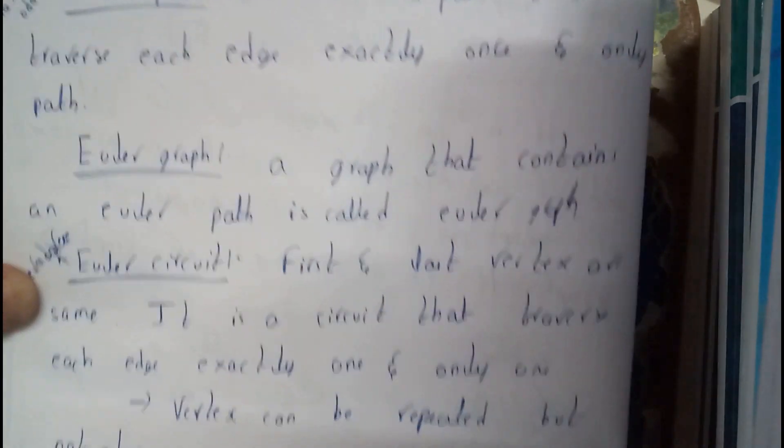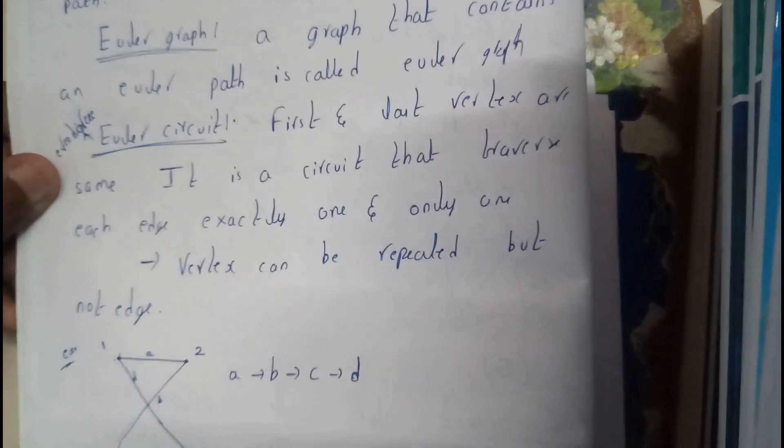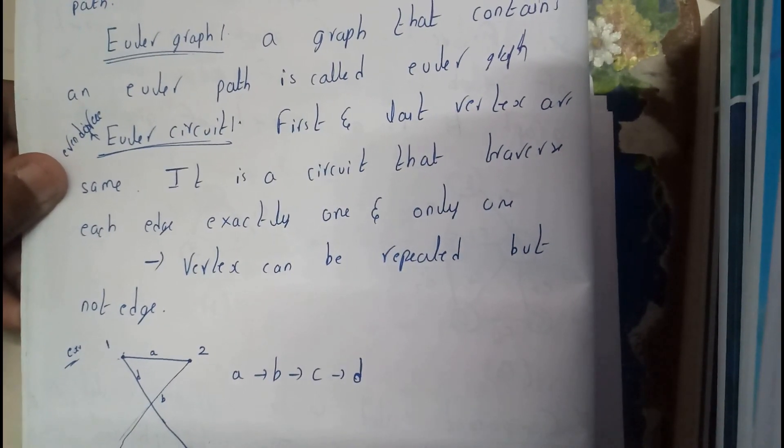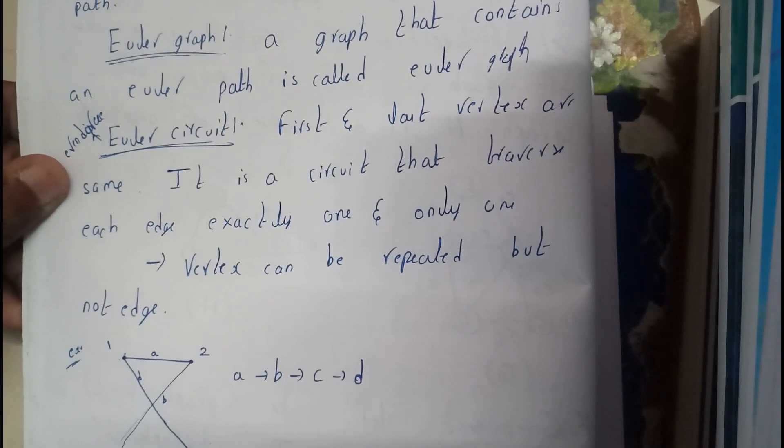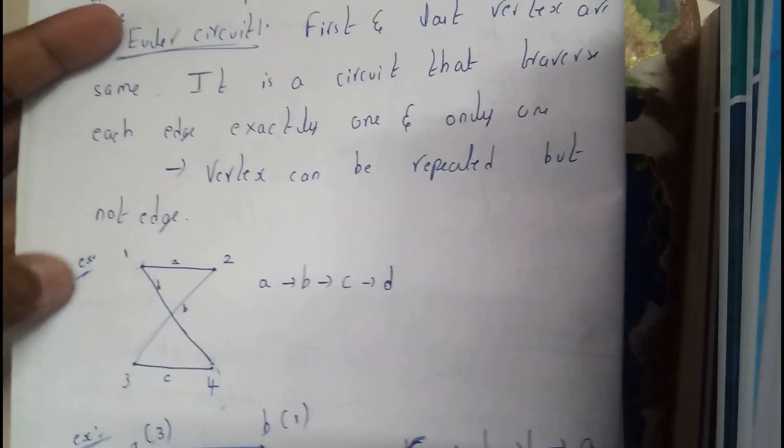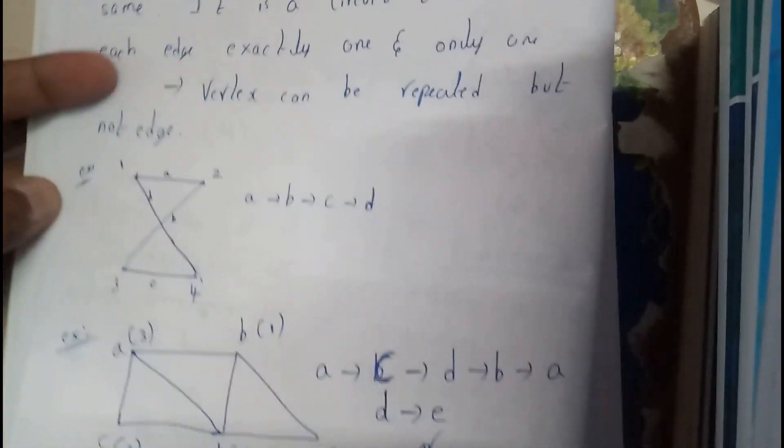I think everyone is clear with it. A vertex in all this, a vertex can be repeated, but an edge should not be repeated. The main condition for Euler's. Let us take an example.